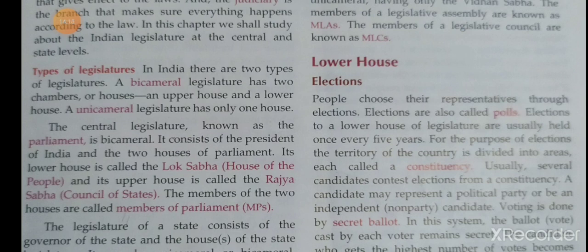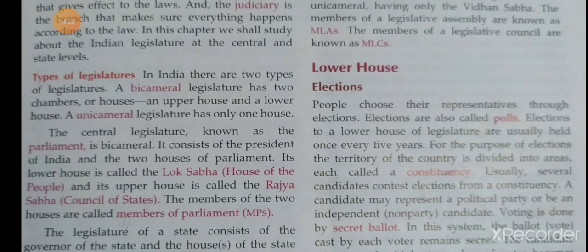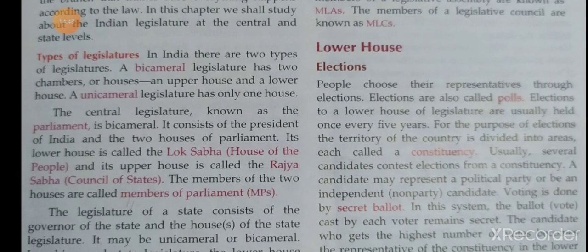The state legislature makes laws on subjects in the State List — examples include law and order, police, public health, agriculture, and land revenue. In the Concurrent List, both central and state legislatures can make laws on subjects like education, electricity, marriage, and divorce.